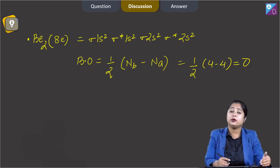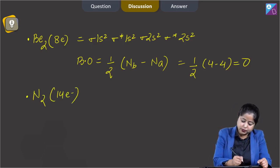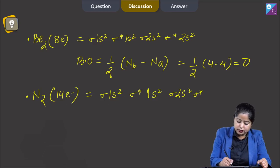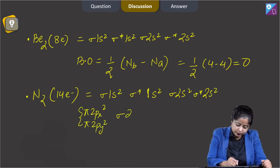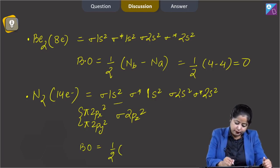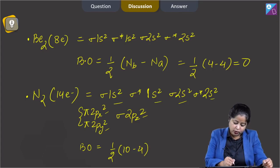Let us also calculate the bond order of the remaining molecules. For N2 with 14 electrons: σ1s², σ*1s², σ2s², σ*2s², π2px², π2py², σ2pz². Bond order = ½(bonding electrons − antibonding electrons) = ½(10 − 4) = 3.